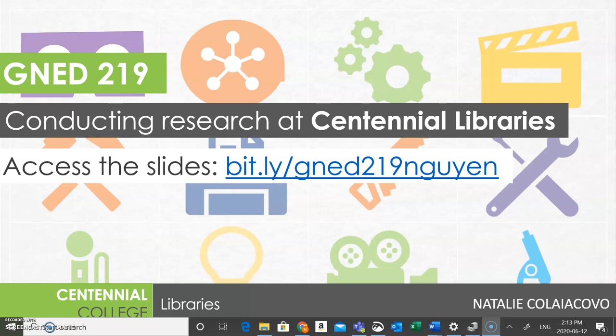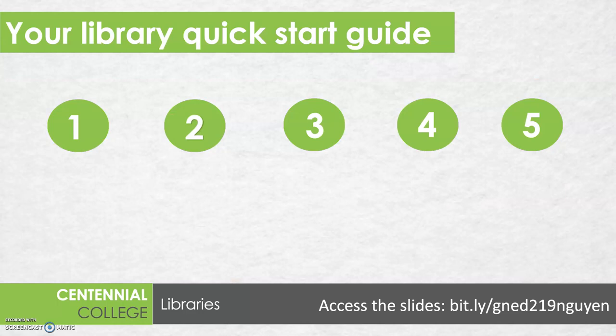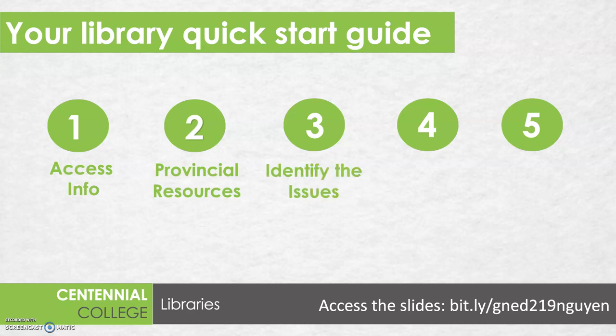In this series of short videos, we're going to look at how to get started accessing library resources, how to find information for your provincial resources assignment, then we'll look at how to identify the issues you want to address in your research assignment, how to find some good quality research for that assignment, and finally, how to cite the information that you use in both your assignments by using APA.